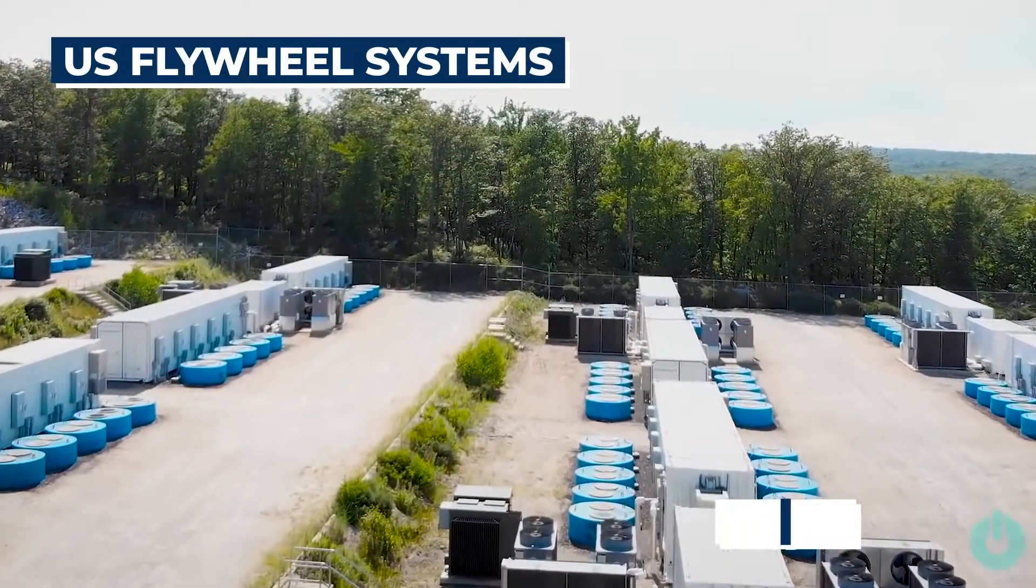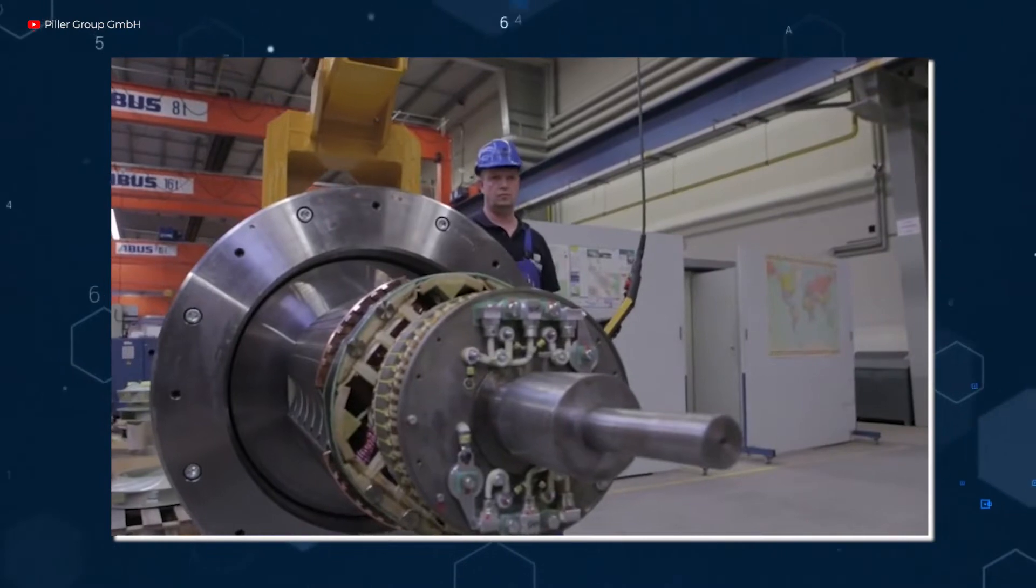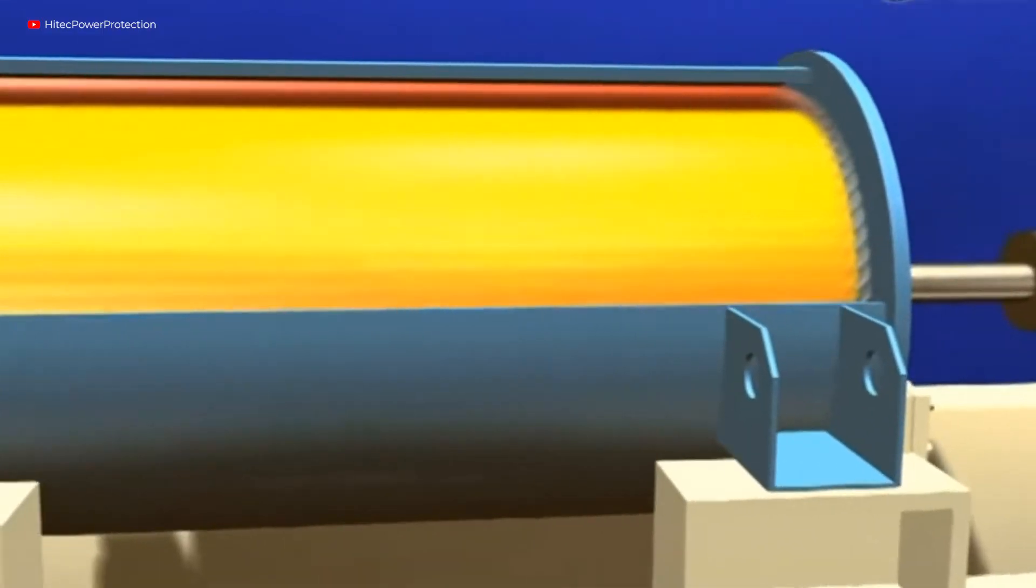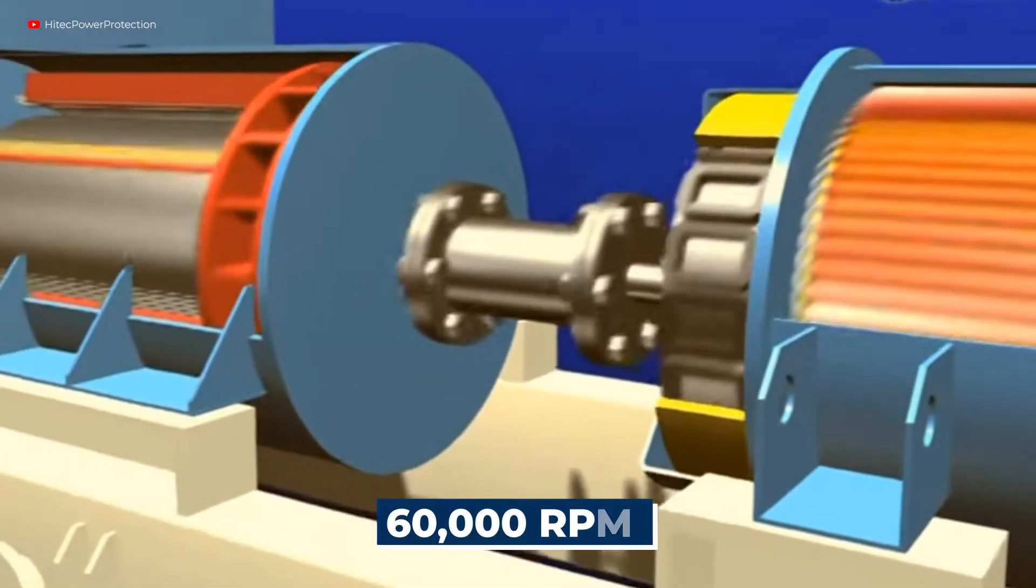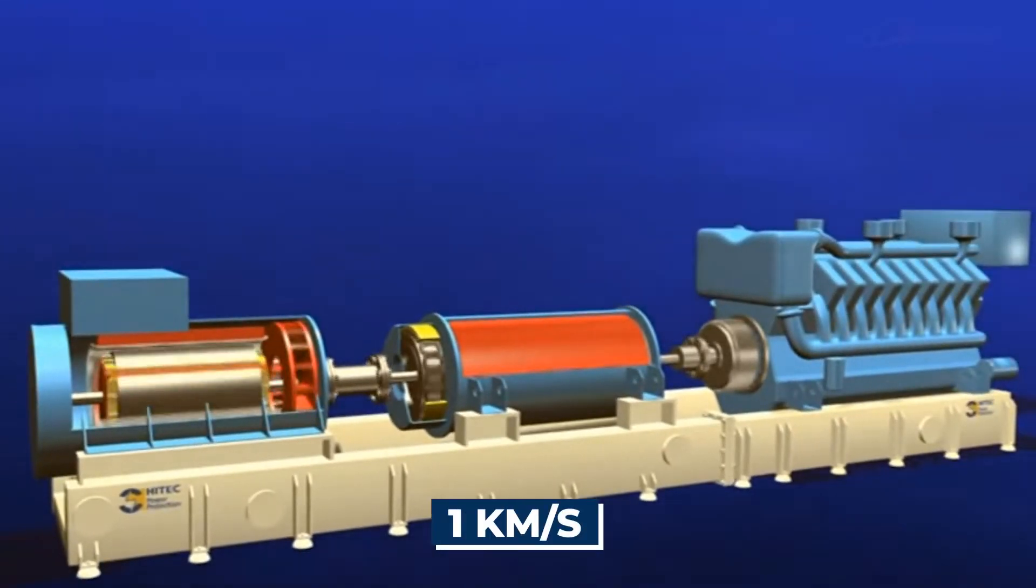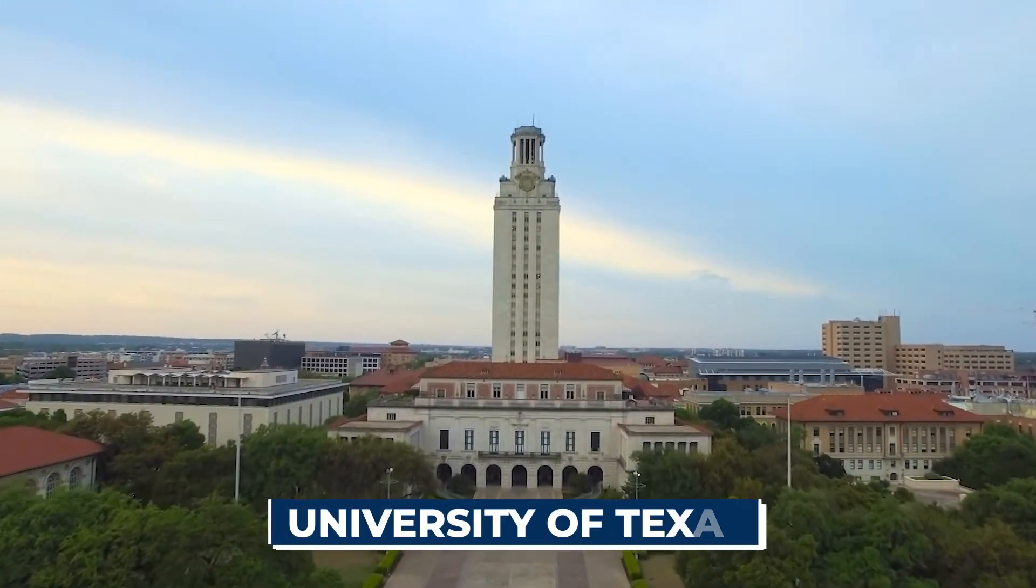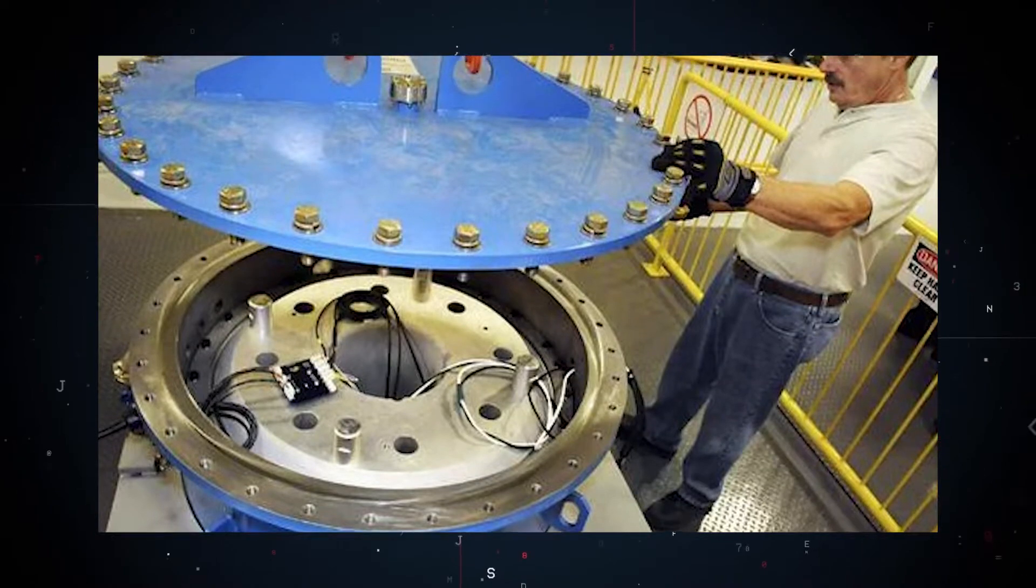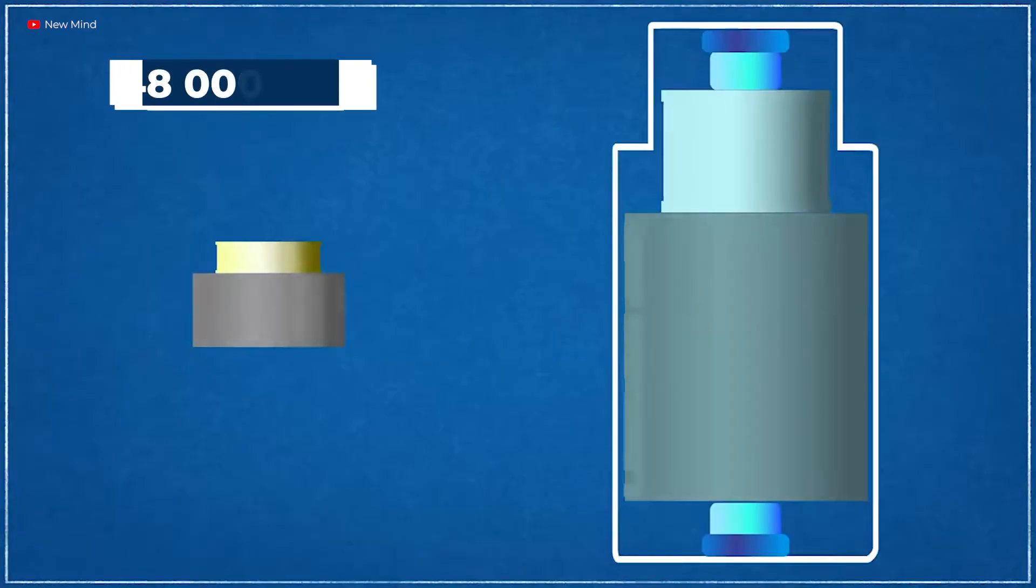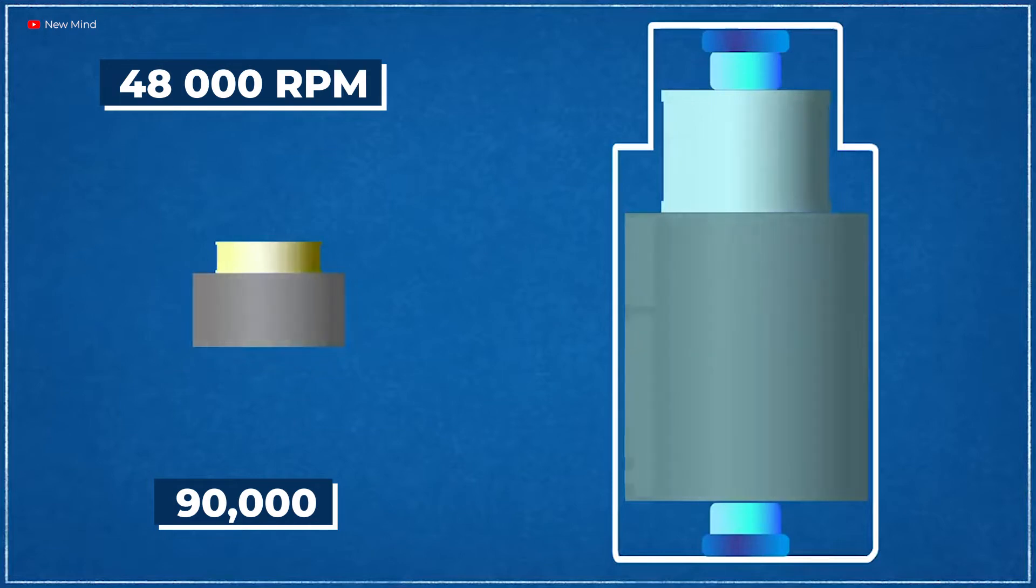U.S. Flywheel Systems, located in Pasadena, has even used such advancements to run a composite flywheel at 60,000 rpm, with a rim speed of around 1 km per second. In addition, the University of Texas at Austin has put a composite flywheel spinning at roughly 48,000 rpm through more than 90,000 charge-discharge cycles with no loss of function.